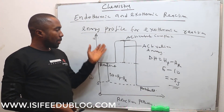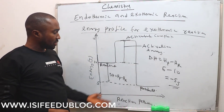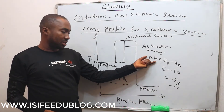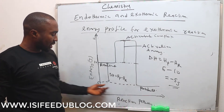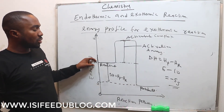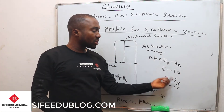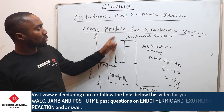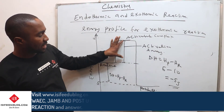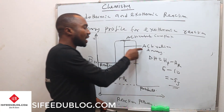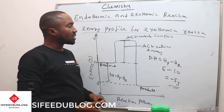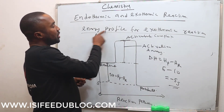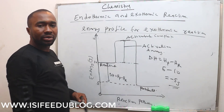The energy profile for the exothermic reaction is shown here. To confirm it is exothermic, we check delta H: heat of product minus heat of reactant. The heat of the product is 5, which is less than the heat of the reactant, 10. So 5 minus 10 gives minus 5 — that negative sign shows heat is taken away from the system. The distance from the reactant to the top of the curve is the activation energy, and the top point is the activated complex. This diagram depicts the energy profile for the exothermic reaction.